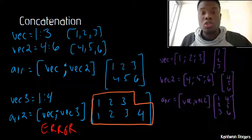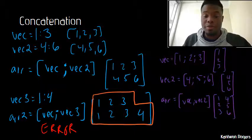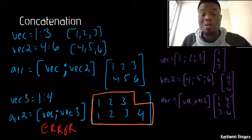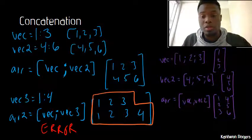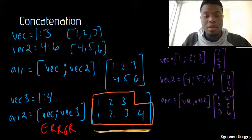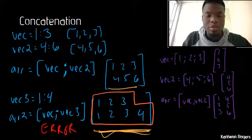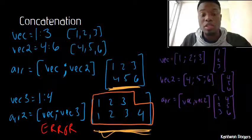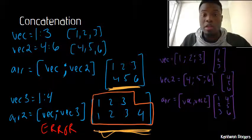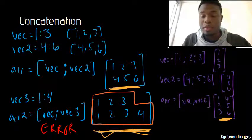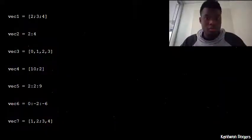We usually talk about the size of arrays in terms of the number of rows and the number of columns. So this first array has two rows and three columns — we call this a two by three array. The other one is a three by two array.